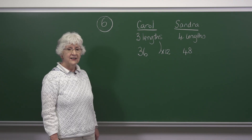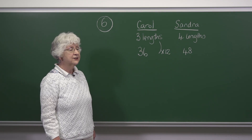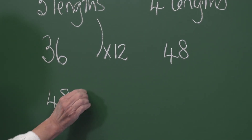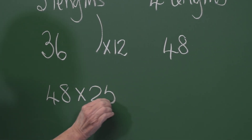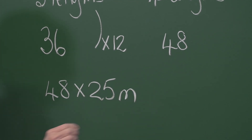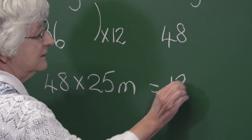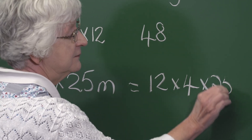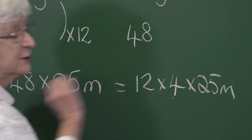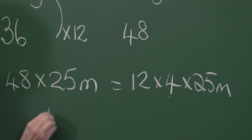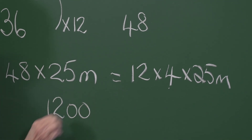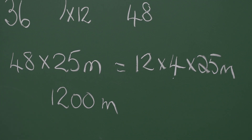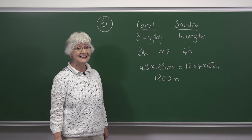However, each length was 25 meters. So altogether Sandra swims 48 times 25 meters, which is 12 times 4 times 25. And 4 times 25 is 100. So altogether Sandra swims 1,200 meters. The answer is option D.